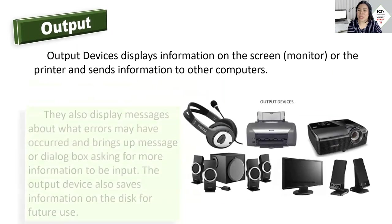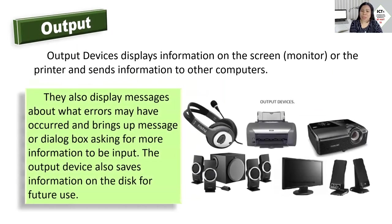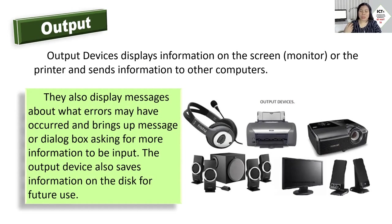Another operation of a computer is what we call output. For the computer to perform the output operation, it needs output devices where the data or content is displayed. Output devices include the printer, the monitor, the speakers, the projector, or the headset where you can hear audio output like voice and sound. Output devices also display error messages, bring up dialogue boxes asking for more information, and save information on disk for future use.